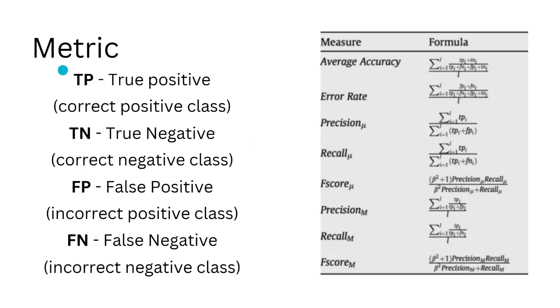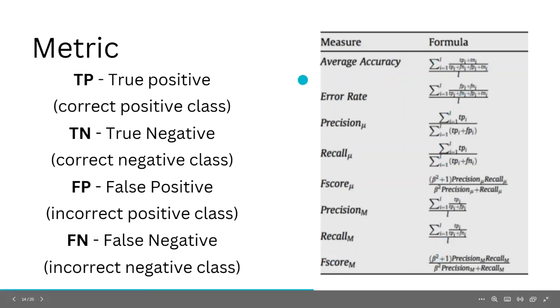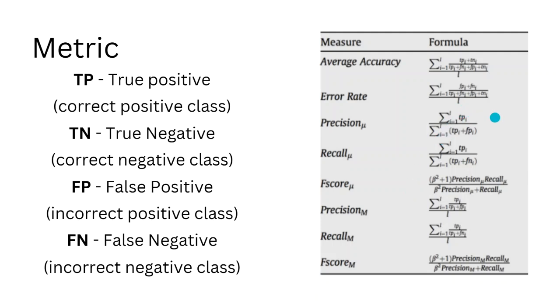For metric calculation we used accuracy. So it requires us to have true positive, true negative, false positive, and false negative. Because we have five emotions, we need to adjust these formulas for multi-class classification. So basically it's the same formulas, but you have to find the average of them. As you can see it is the summation of accuracies divided by the number of classes. And this happens for all of the metrics.